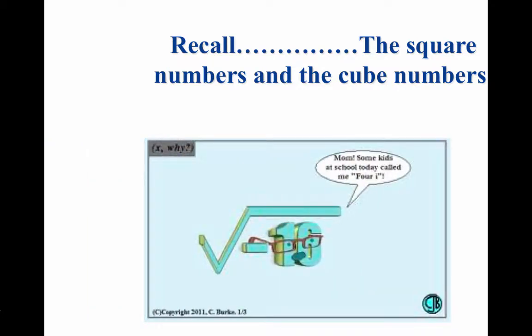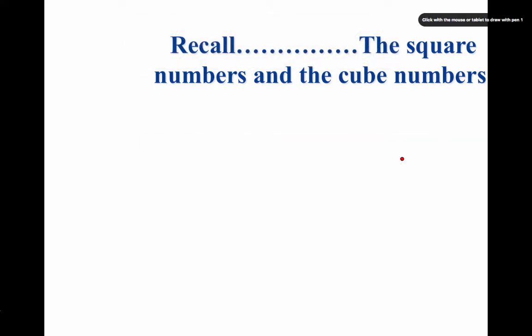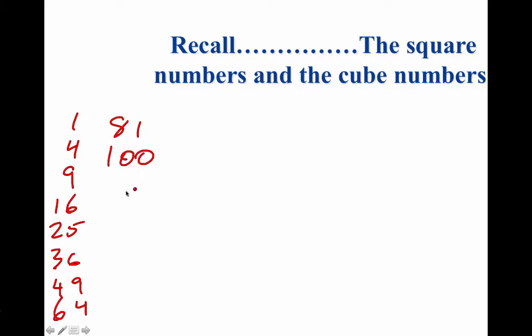Square numbers and cube numbers, you want to keep track of perfect squares. So, your square numbers are going to be 1 squared is 1, 2 squared is 4, 3 squared is 9, and continuing through 4, 5, 6, 7, 8, 9, 10.